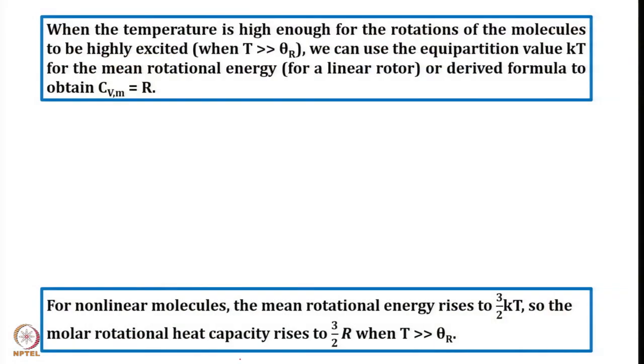Consider the rotation of a molecule. There are two types of rotors: one is a linear rotor like carbon monoxide or carbon dioxide, and a non-linear rotor — an example is the water molecule. We need to use the expressions for the mean energy. C_Vm equals N_A times the derivative of the mean rotational energy, and therefore I need the expression for the mean rotational energy.